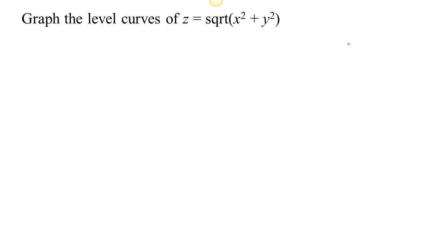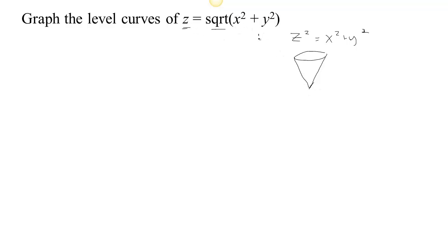Another case of a function with two inputs and one output. We know this is a cone because if we square both sides, we find that z squared equals x squared plus y squared. No matter what value of z we have, we get circular cross-sections, and when z equals zero those circles come to a point. This equation describes a two-sided cone with an upper half and a lower half, but the original equation says z is the square root — that's positive — so the graph is just the upper cone.